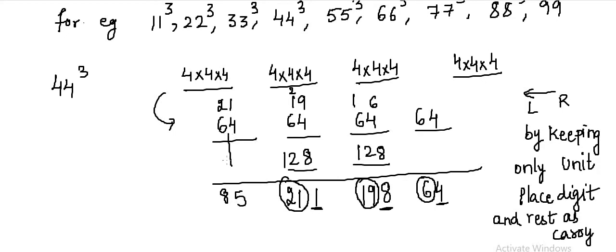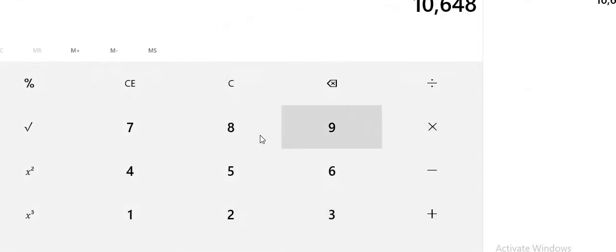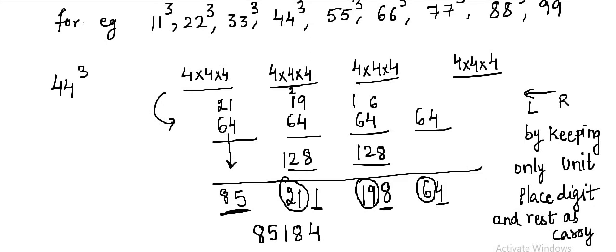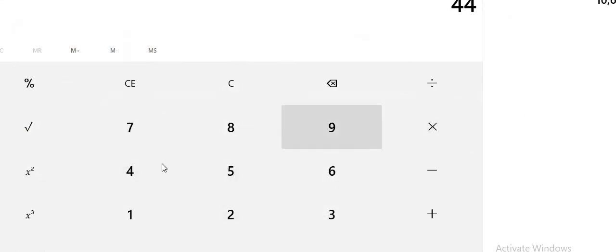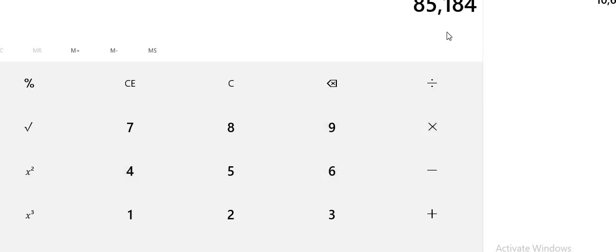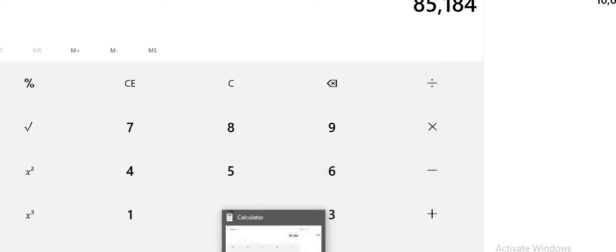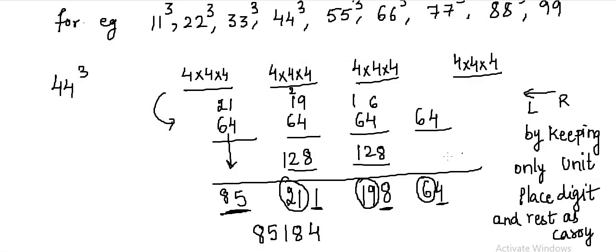Since this is the last box, there is no further carry over, so we will keep 85 as our answer. So our answer comes out to be 85,184. Let us check it through the calculator — 44 multiplied by 44 multiplied by 44 gives 85,184. So our answer is correct.